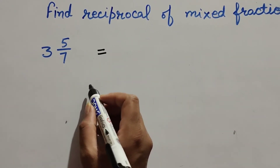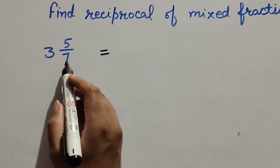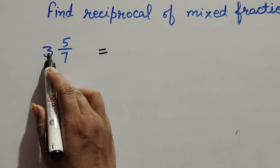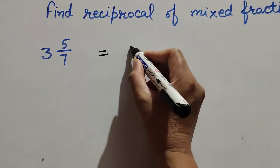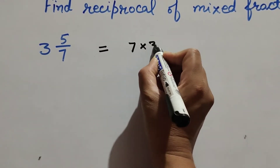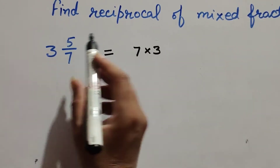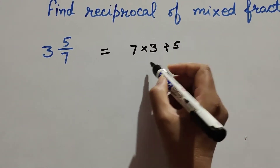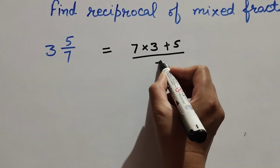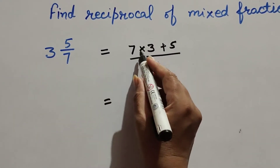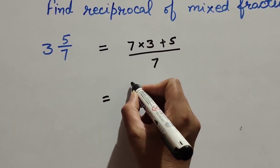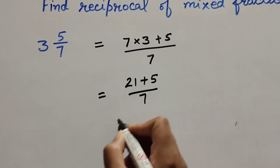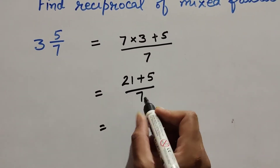To convert, take the denominator of the fraction, which is 7, and multiply it by the whole number 3. Then add the numerator 5. So we get 7 multiplied by 3, which is 21, plus 5, giving us 21 plus 5 over 7.